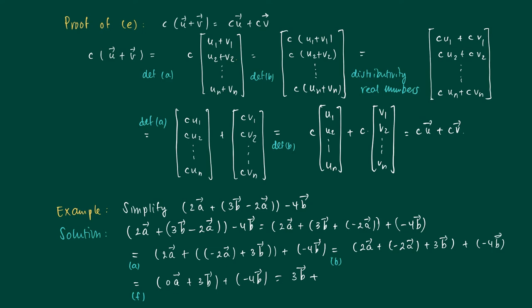Which equals the sum of the two scalar constants here, 3 minus 4, so it equals minus b.